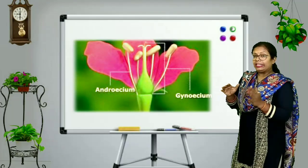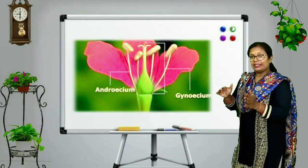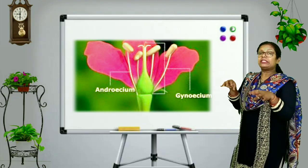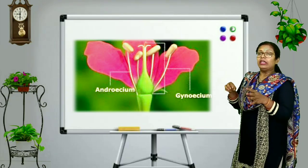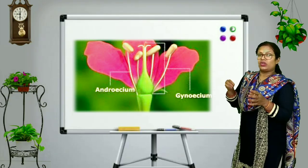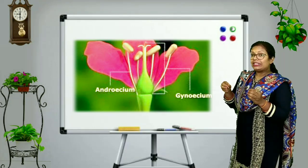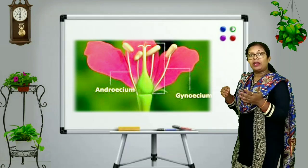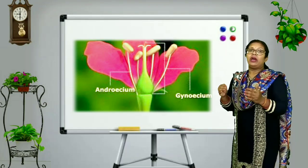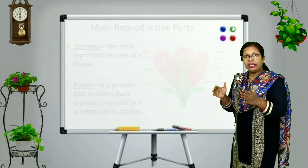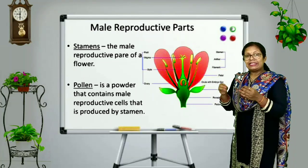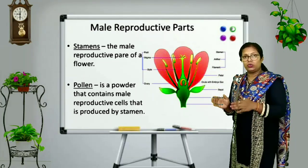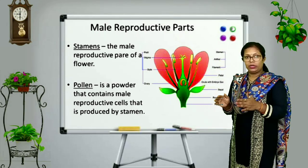After petals, the third whorl moving inward is the androecium. Androecium is collectively made up of many stamens. Stamens are thread-like structures and are the male reproductive part of the flower. Stamens are collectively known as androecium.